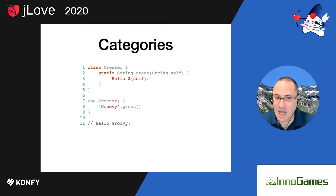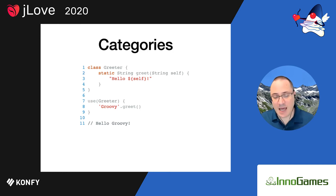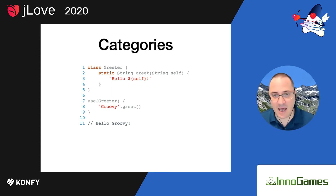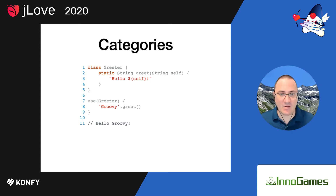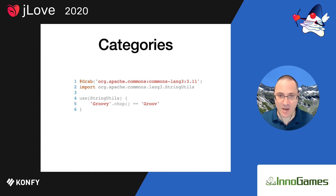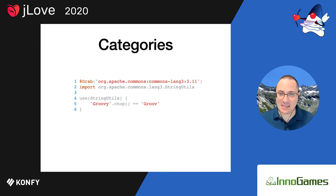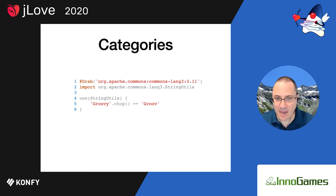In Groovy, you can use class literals without .class as in Java, but you can also use .class if you want. It's within that particular scope that we can make use of the greet method — if we were to use greet outside of that scope, we'd get a runtime exception. Notice that because the idiomatic convention for writing a category requires a static method with at least one argument, we can reuse many existing Java utility classes like Commons Lang's StringUtils as Groovy categories without any changes.